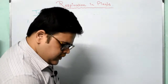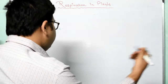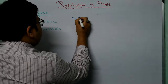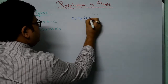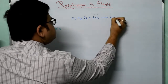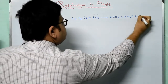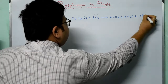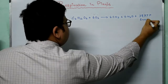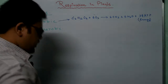The first thing is the equation for aerobic respiration, which I have already mentioned, yet I am writing it once again. It is C6H12O6 plus 6O2, and it gives out 6CO2 plus 6H2O plus 38 ATP of energy. This is the equation for aerobic respiration.